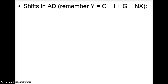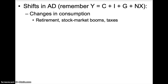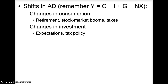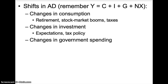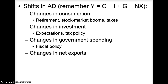The aggregate demand curve does not stay in one spot — it can shift if one of the variables of GDP changes. A change in consumption C, such as people becoming more concerned about retirement and saving more, a stock market boom, or a change in taxes, will shift aggregate demand. A change in investment I due to a change in expectations about the future or tax policy will also shift AD. Government spending G can change through fiscal policy — the President and Congress' decisions about how much money to spend and tax. Finally, a change in net exports NX due to exchange rates or the world economy can shift the aggregate demand curve.